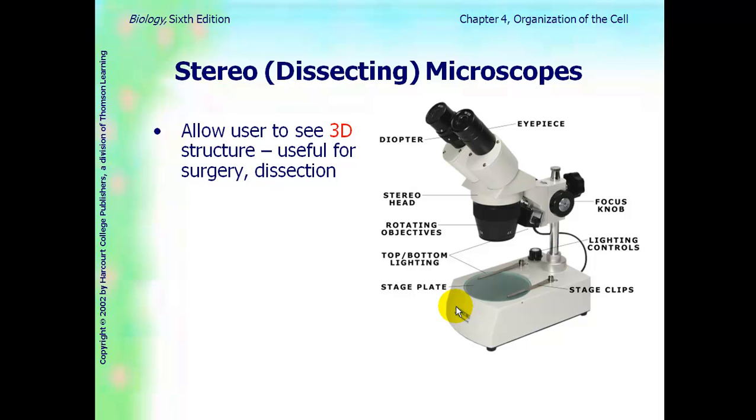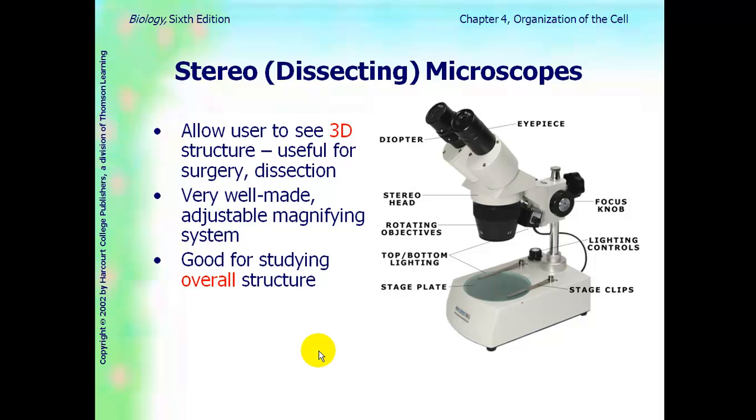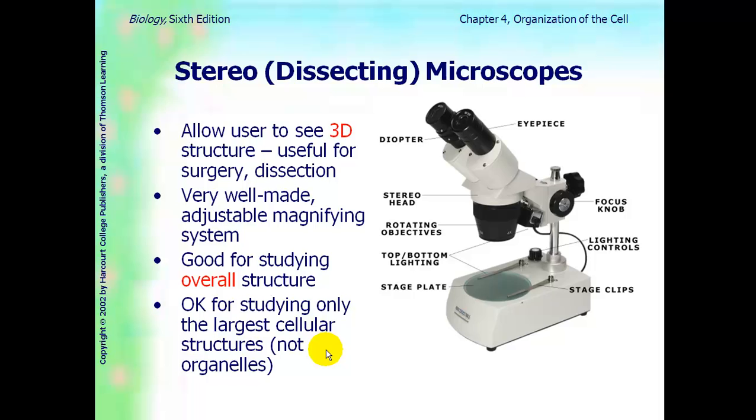There are different types of microscopes. This is a dissecting microscope. As you can see, the lens is really large here. It allows the user to see 3D images. It's useful for surgeries and dissections. It's very well made and it has an adjustable magnifying system. It's good for studying overall structure. It's just okay for looking at cells.